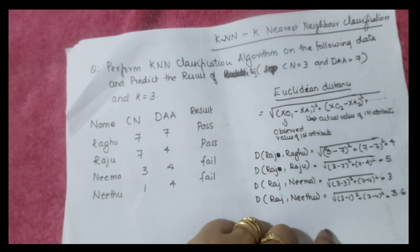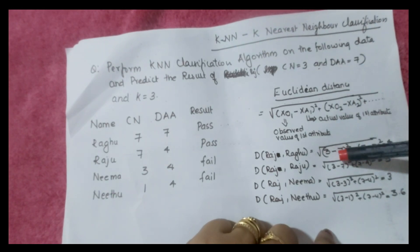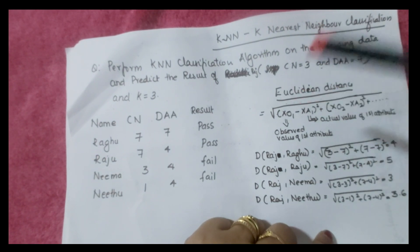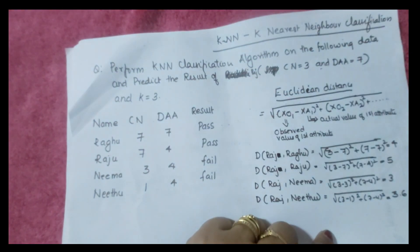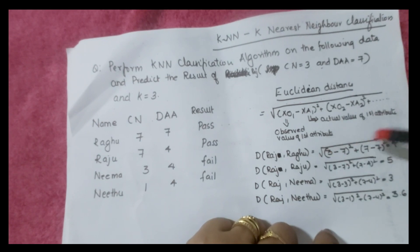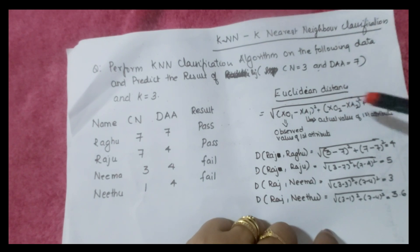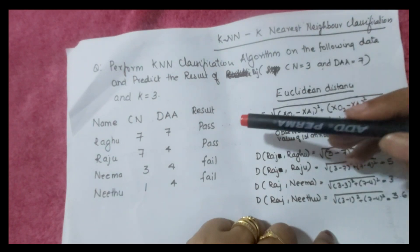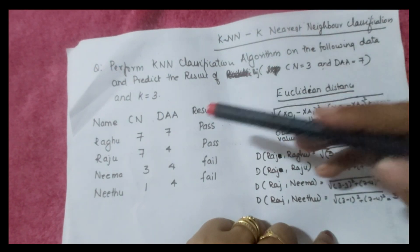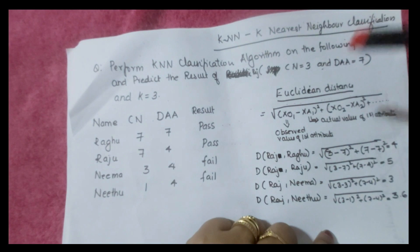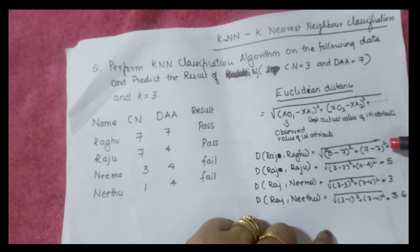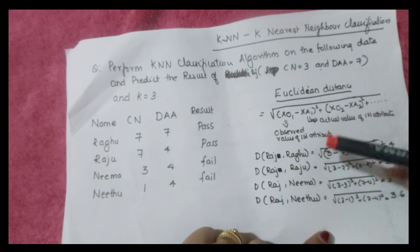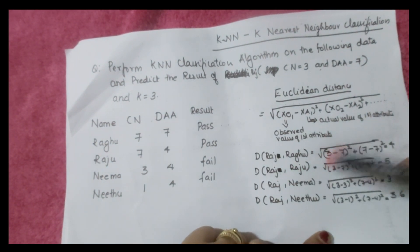Distance of Raj to Ragu = √((3−7)² + (7−7)²) = √(16 + 0) = 4. The observed values for Raj are CN=3 and DA=7, while Ragu's actual values are CN=7 and DA=7. So (3−7)² = 16 and (7−7)² = 0, giving a distance of 4.